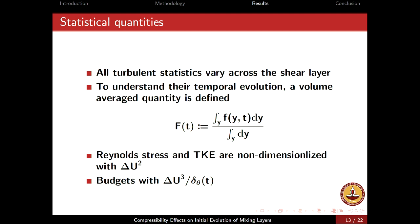To study the turbulent statistics which vary in time, and which at any given time are also a function of y, we define an averaged quantity capital F to eliminate the dependence on y. F can be any turbulent statistic — Reynolds stress, kinetic energy, or budget quantities. Budget quantities are normalized with ΔU cubed divided by the instantaneous momentum thickness, and Reynolds stresses and TKE are normalized with the square of the velocity difference.